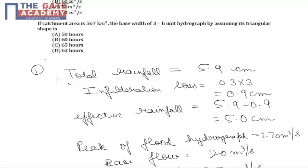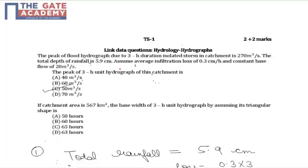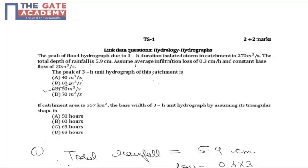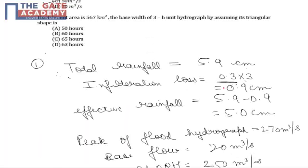infiltration loss is given as 0.3 cm per hour and it is mentioned in the question that it is a 3 hour duration isolated storm. So, total infiltration loss will be 0.3 into 3, that is 0.9 cm. Hence, effective rainfall will become 5.9 minus 0.9, that is 5 cm.